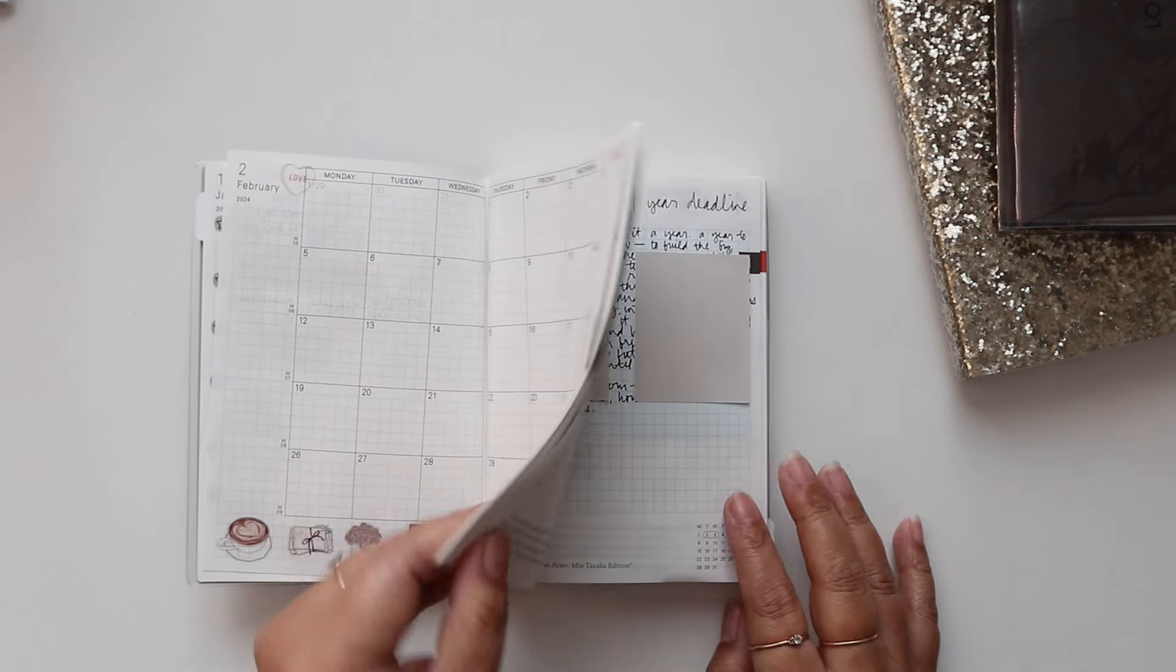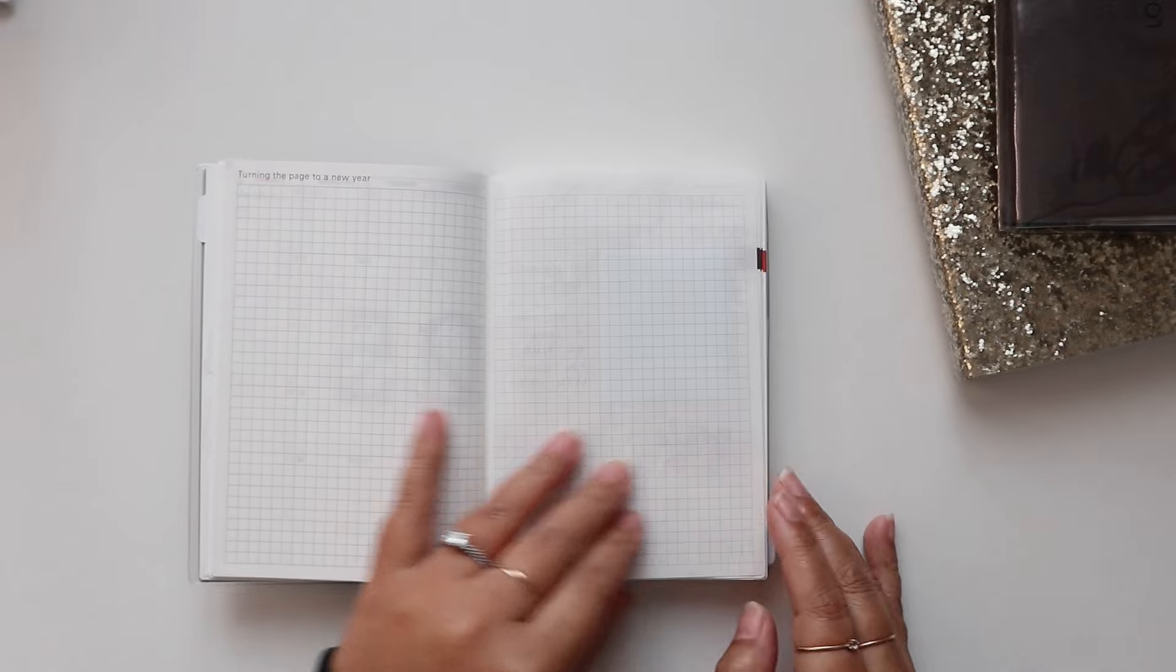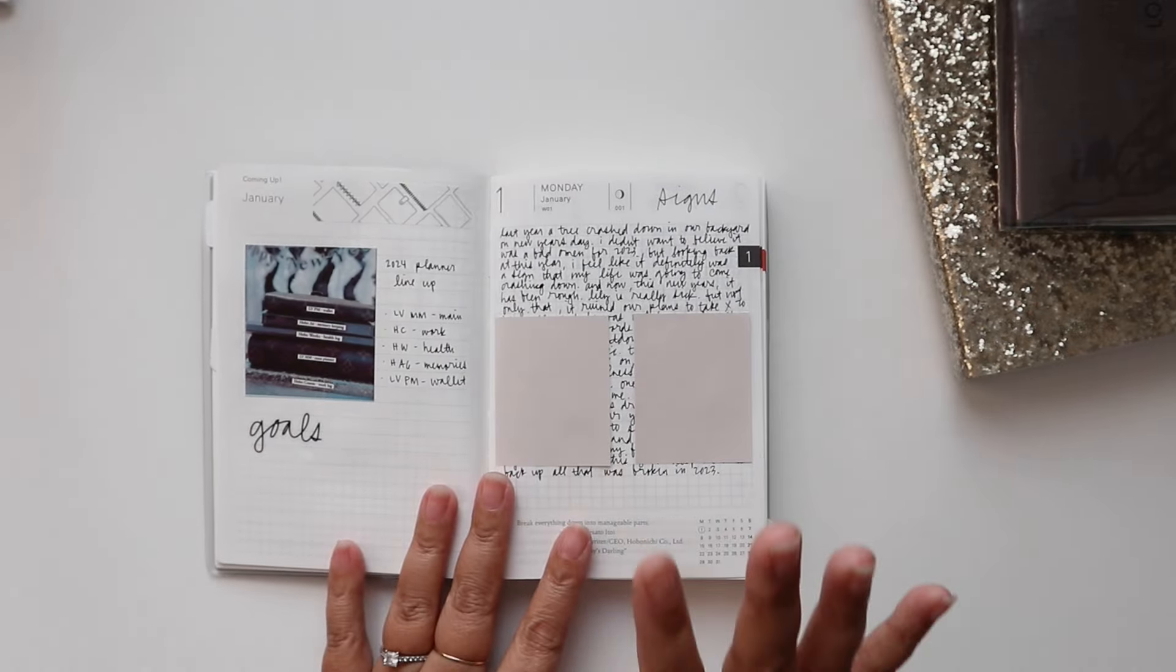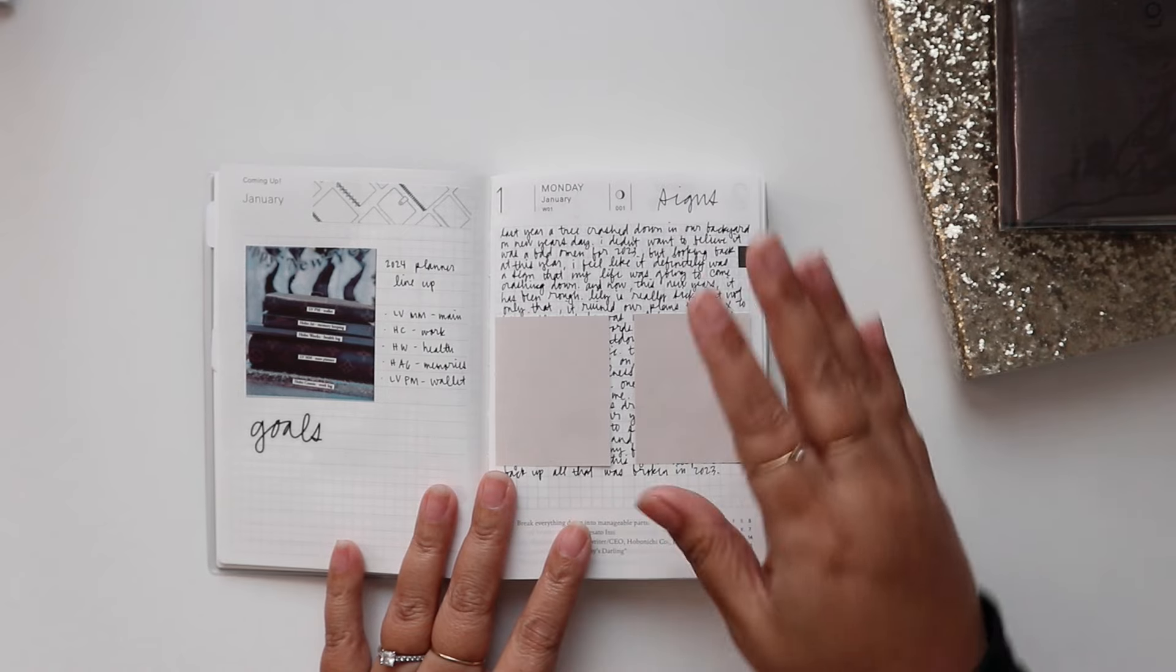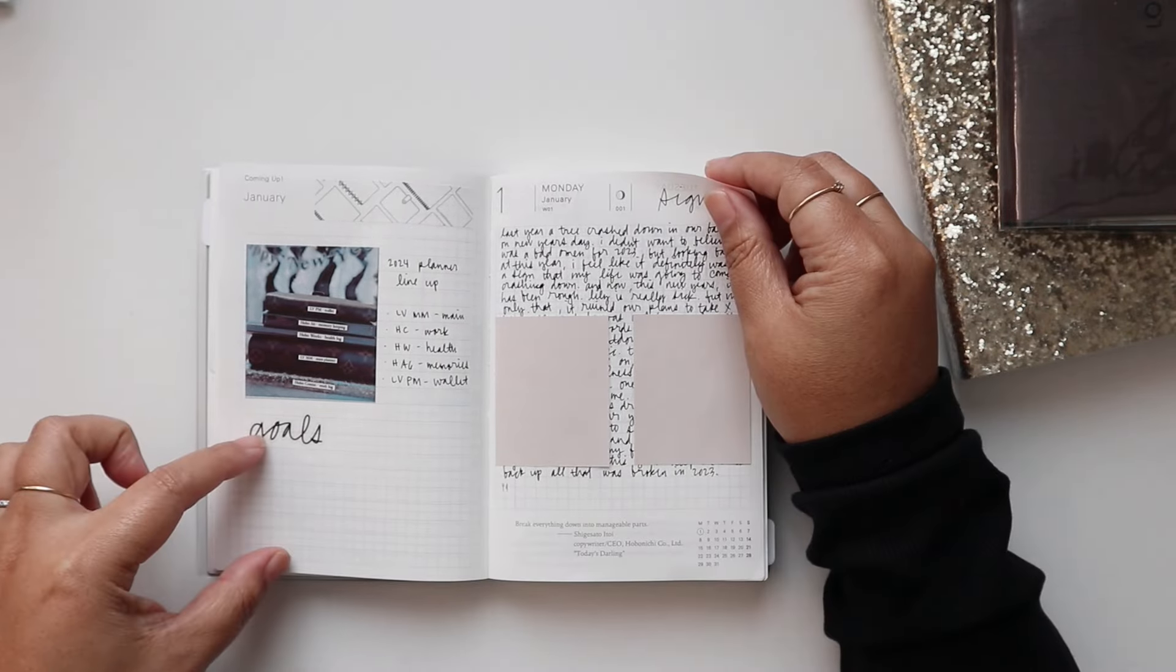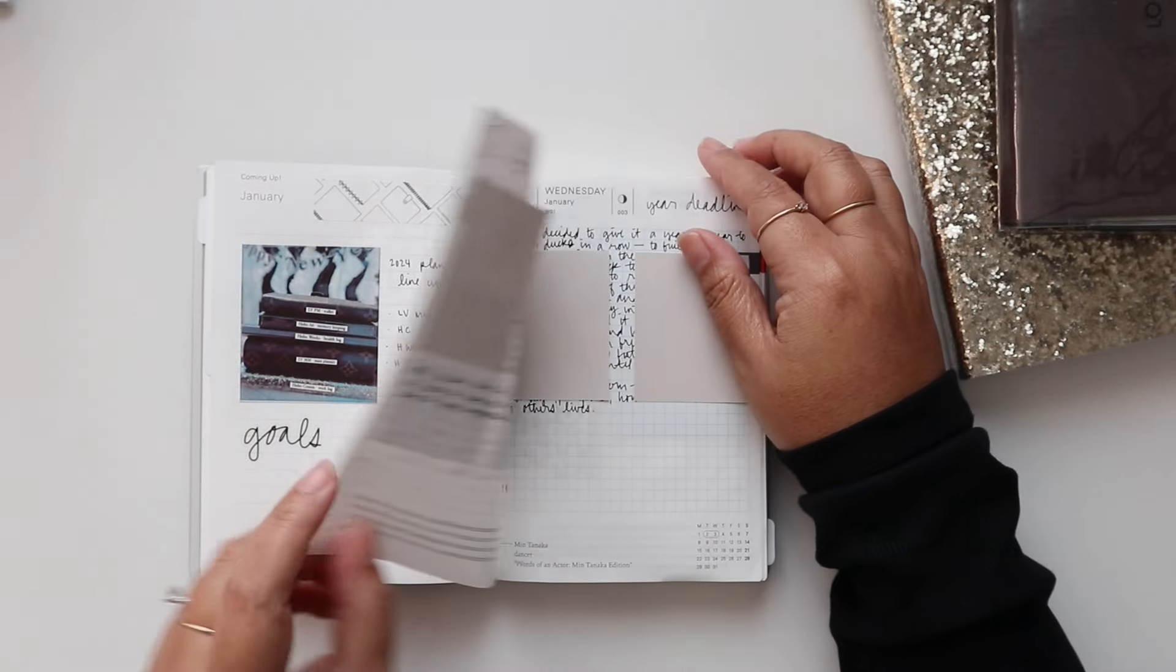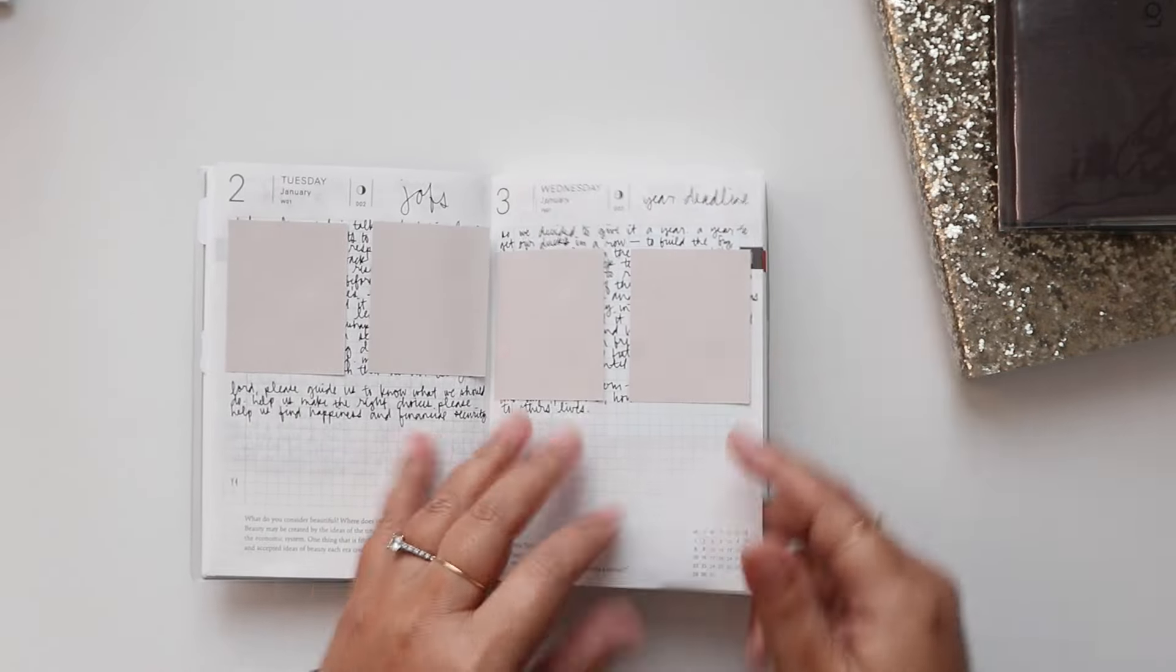And then here I'll do a little flip through of my daily pages. These daily pages are for memory keeping and journaling. Still haven't set my goals for the year. Here you can see I did my planner lineup, some journaling, and here's another thing.